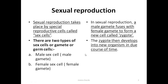We have to note here that gametes always have half the number of chromosomes. When the two unite, their half numbers combine to create the full number of chromosomes in an organism. So gametes are cells which have half the number of chromosomes in them.